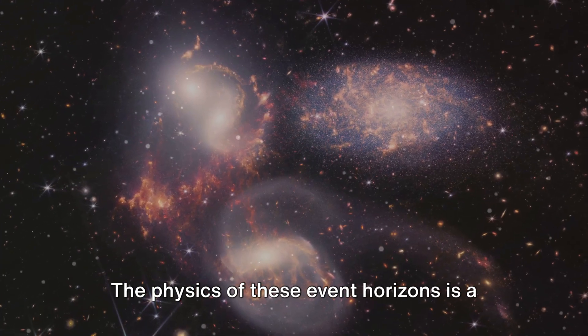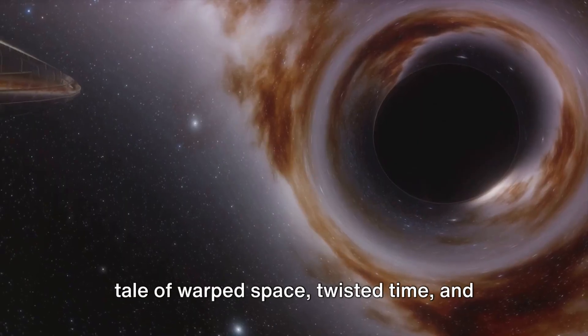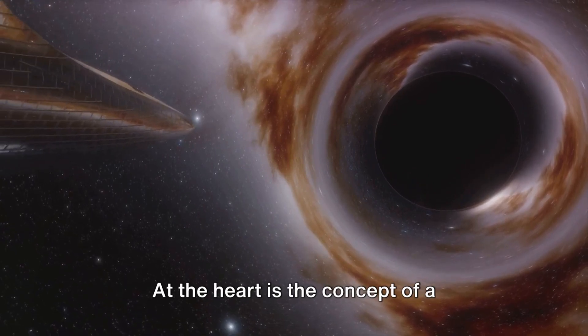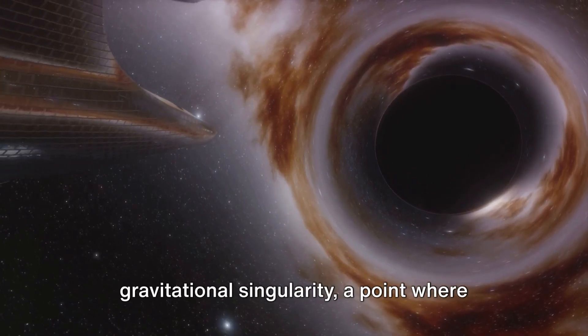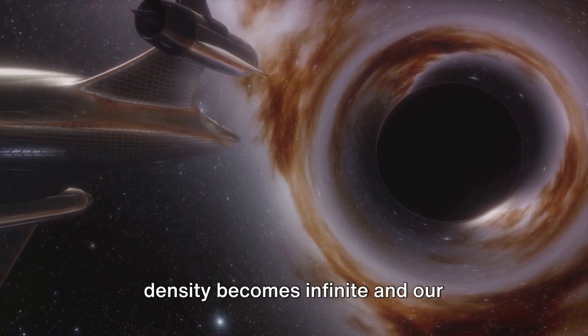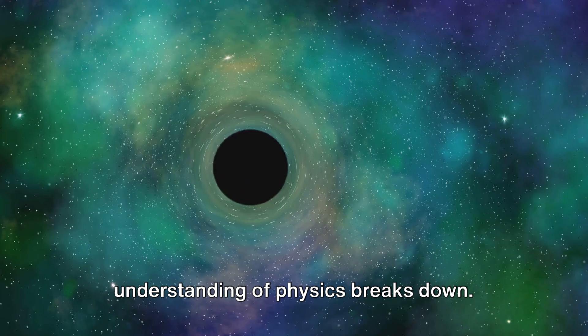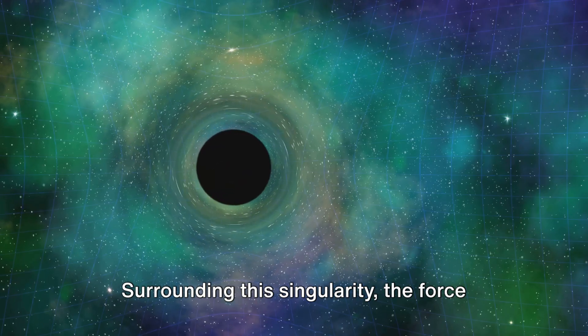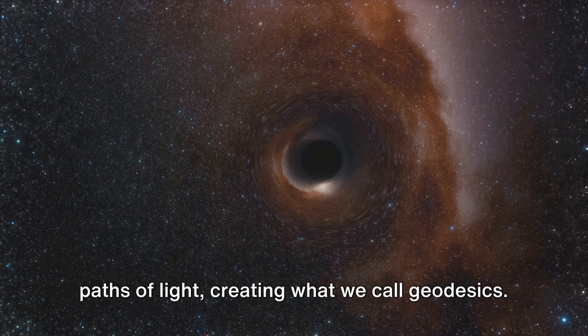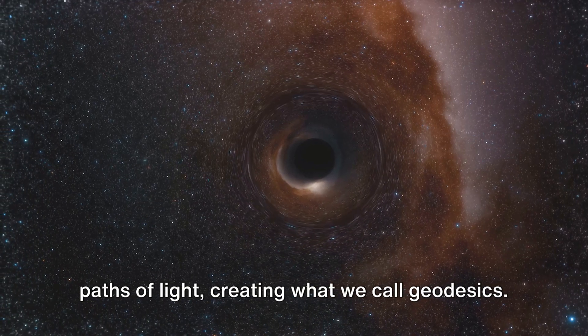The physics of these event horizons is a tale of warped space, twisted time, and extreme gravity. At the heart is the concept of a gravitational singularity, a point where density becomes infinite and our understanding of physics breaks down. Surrounding this singularity, the force of gravity is so strong that it bends the paths of light, creating what we call geodesics.